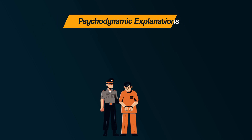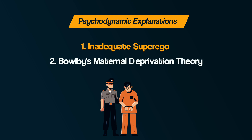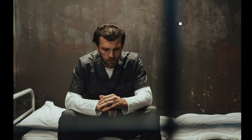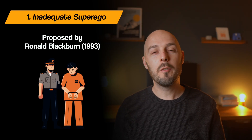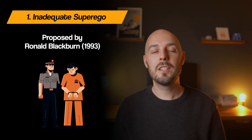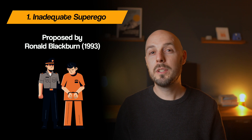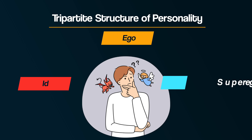This is going to include an exploration of firstly the inadequate superego, and then secondly Bowlby's maternal deprivation theory. John Blackburn's theory of the inadequate superego is rooted in psychodynamic theory, particularly drawing on Freud's tripartite structure of the personality: the id, the ego, and the superego.